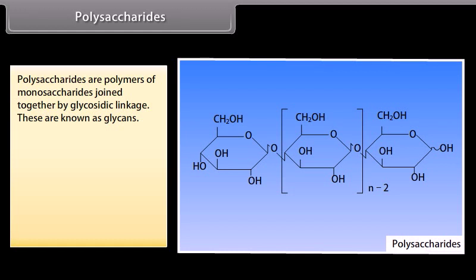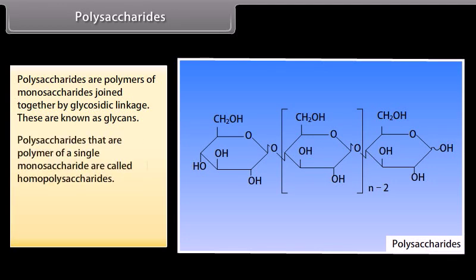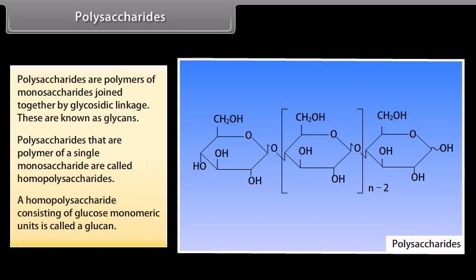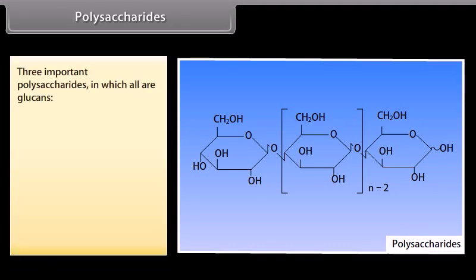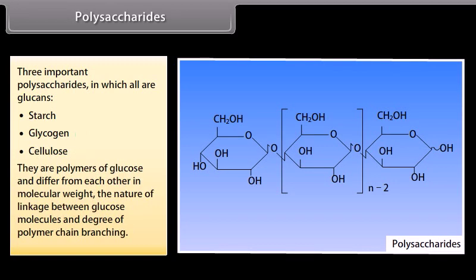Polysaccharides are polymers of monosaccharides joined together by glycosidic linkage and are known as glycans. Polysaccharides that are polymers of a single monosaccharide are called homopolysaccharides; a homopolysaccharide consisting of glucose monomeric units is called a glucan. Three important polysaccharides — all glucans — are starch, glycogen, and cellulose. They are polymers of glucose and differ from each other in molecular weight, the nature of linkage between glucose molecules, and degree of polymer chain branching.